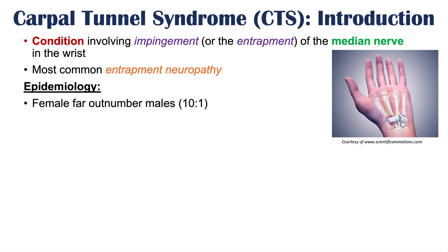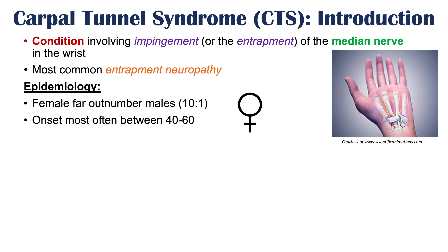So for every one male affected by this condition, 10 females are affected. The onset most often occurs between the ages of 40 to 60, though it can occur at other times of life, and it occurs most commonly in Caucasian populations.